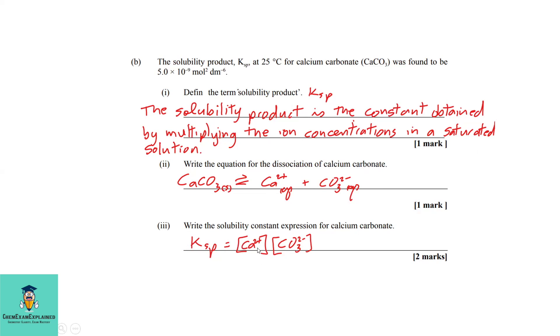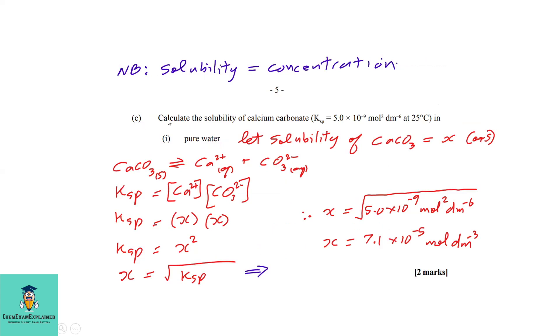Part b3: Write the solubility constant expression for calcium carbonate. This is where you write Ksp = [Ca²⁺] × [CO₃²⁻].